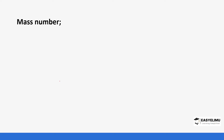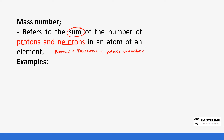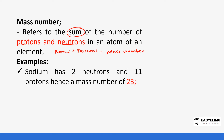Now we go to mass number. The mass number refers to the total number of protons and neutrons in an atom — you take the number of protons and add the number of neutrons. For example, sodium has 12 neutrons and 11 protons, so it is 11 plus 12, giving a mass number of 23.